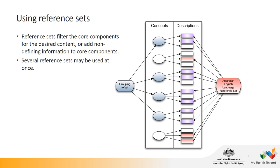Several reference sets may be used at once, and you can use combinations to get the data you need. For example, you can start with a grouping reference set such as the container trade product pack reference set to get the concepts you need, then join the descriptions table to get human-readable terms. However, you need to overlay the Australian English language reference set on the descriptions to get the preferred terms.